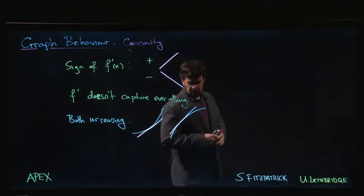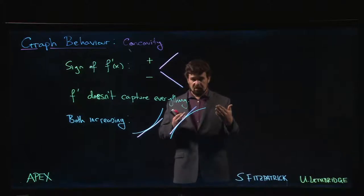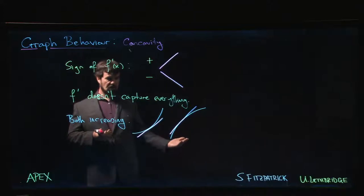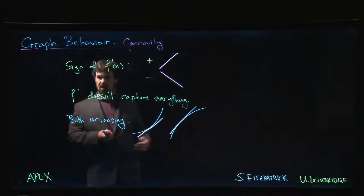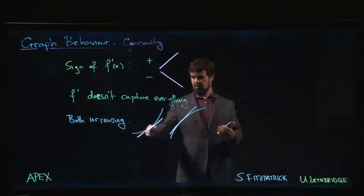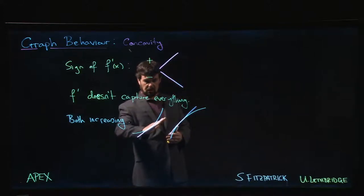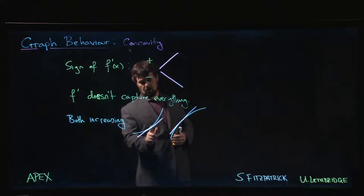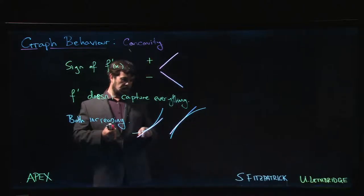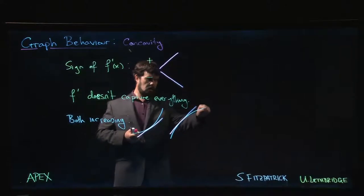There's a significant difference between the two graphs. The first derivative gives you information about locally approximating your graph by a tangent line — what's the slope of that line, is it positive or negative. The first derivative doesn't tell you anything about the way your graph is curving. There's a question of how your graph deviates from being a straight line. When the graph pulls away from the tangent, is it going above or below the tangent?